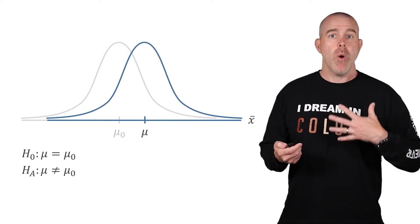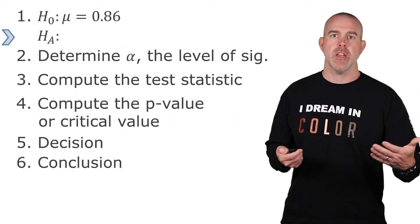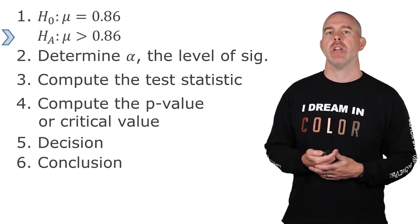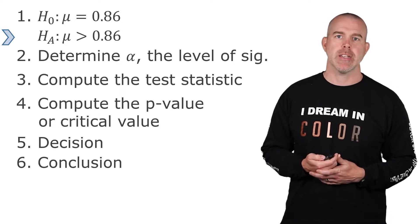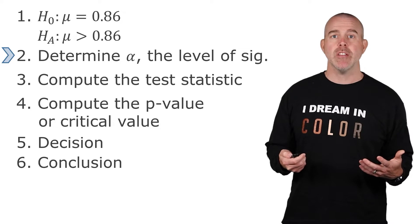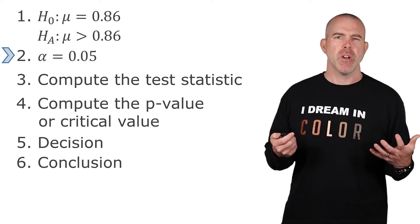In our case, we had this question. It was based on the perception, this perception of larger families. So that's what we're going to do for ours is we're going to use the alternative claim that the mean will be greater than that 0.86. For the level of significance, let's continue with our practice of using 0.05, a pretty typical one.